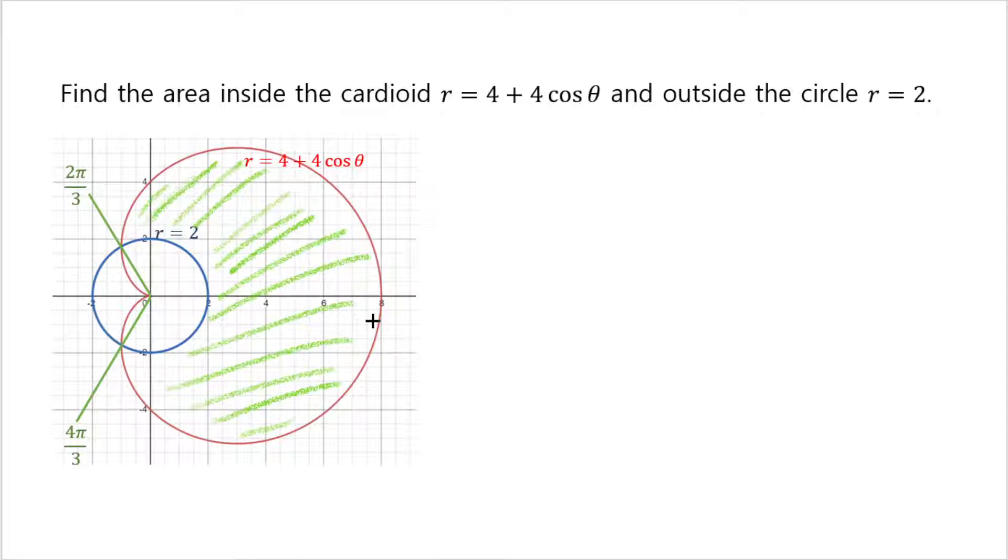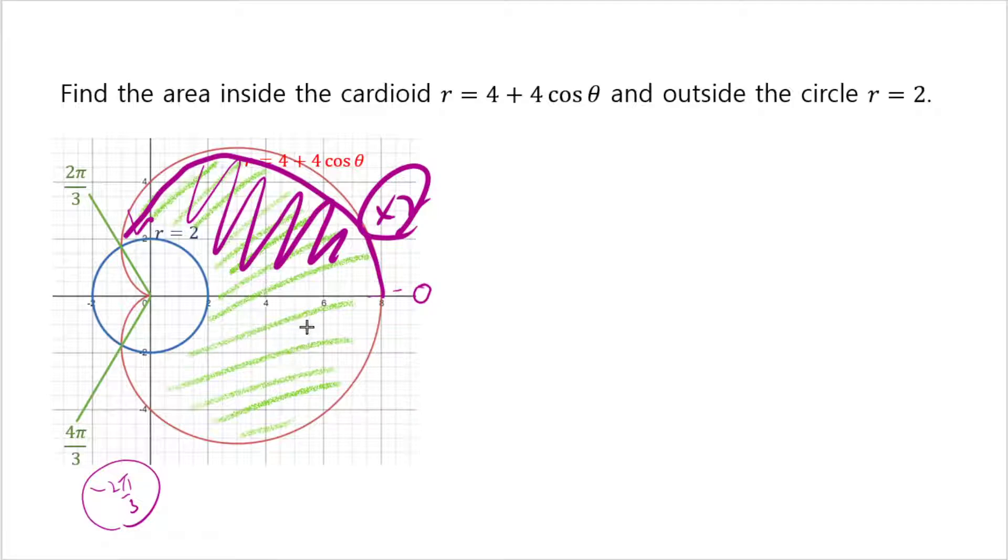You either have to integrate from 0 angle until 2 pi over 3 and then add the angle 4 pi over 3 to 2 pi, so you end up having to add two areas together. Or, since this is coterminal to negative 2 pi over 3, you can integrate from negative 2 pi over 3 to 2 pi over 3. But rather than doing that, why not just integrate from 0 until 2 pi over 3, but that only gives you this much, so you multiply that by 2.